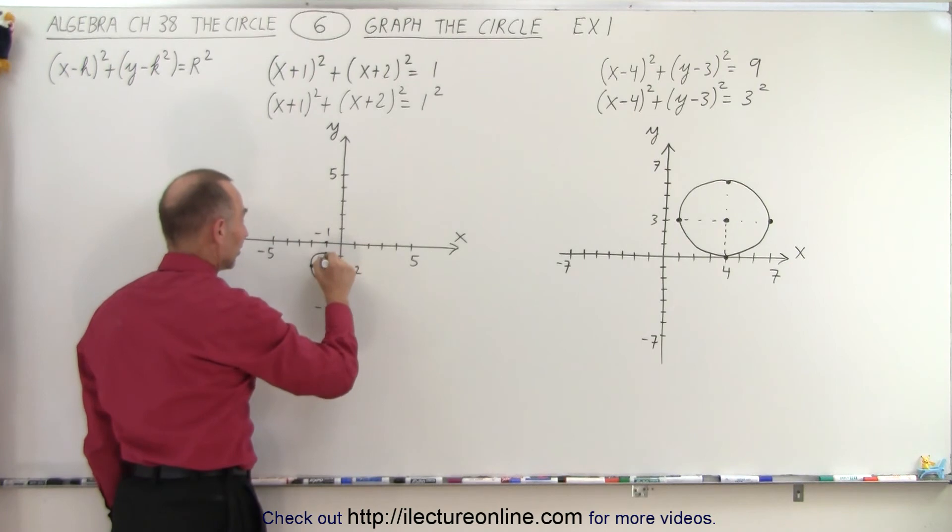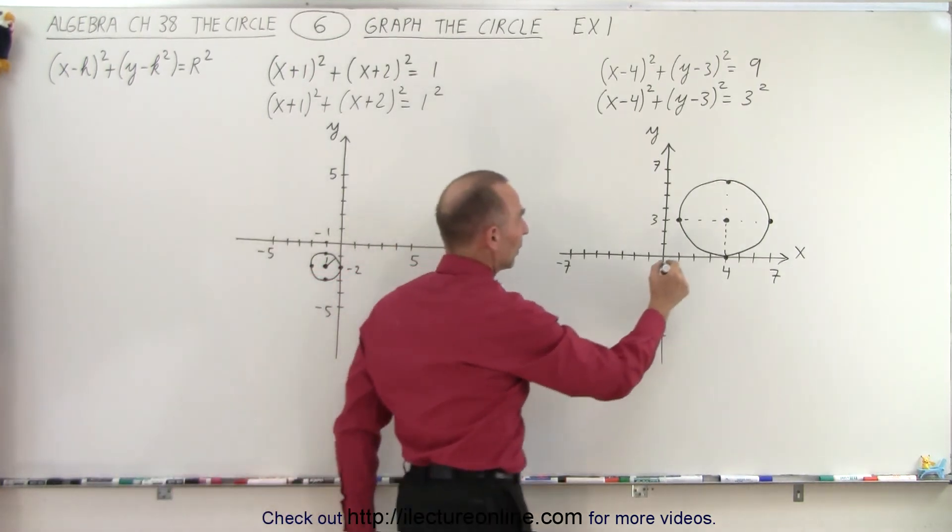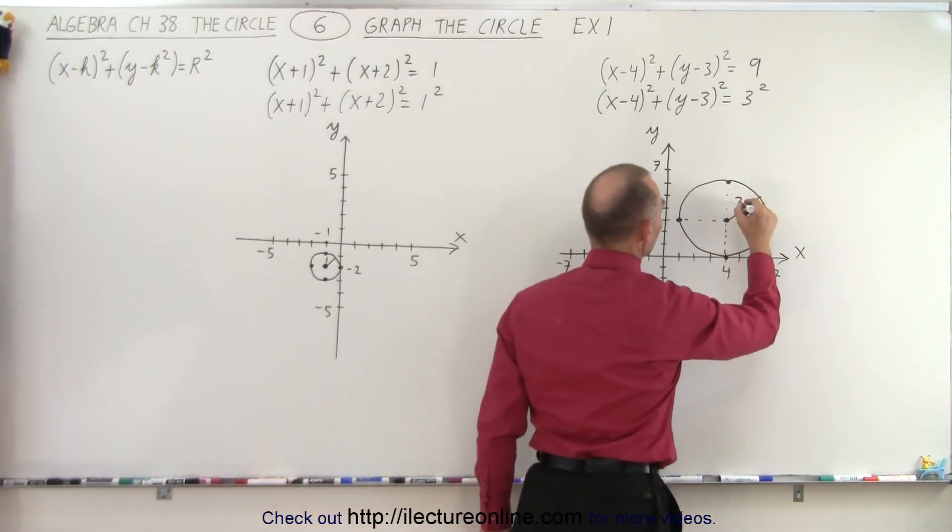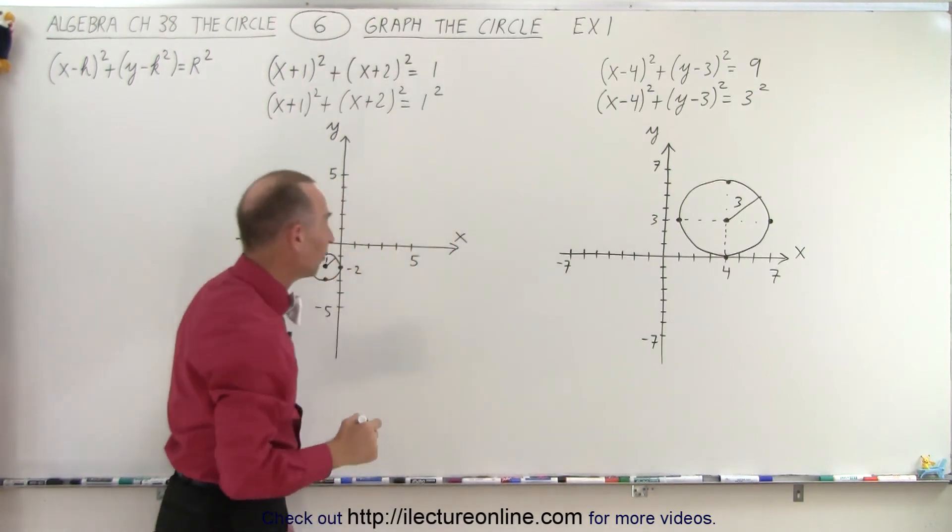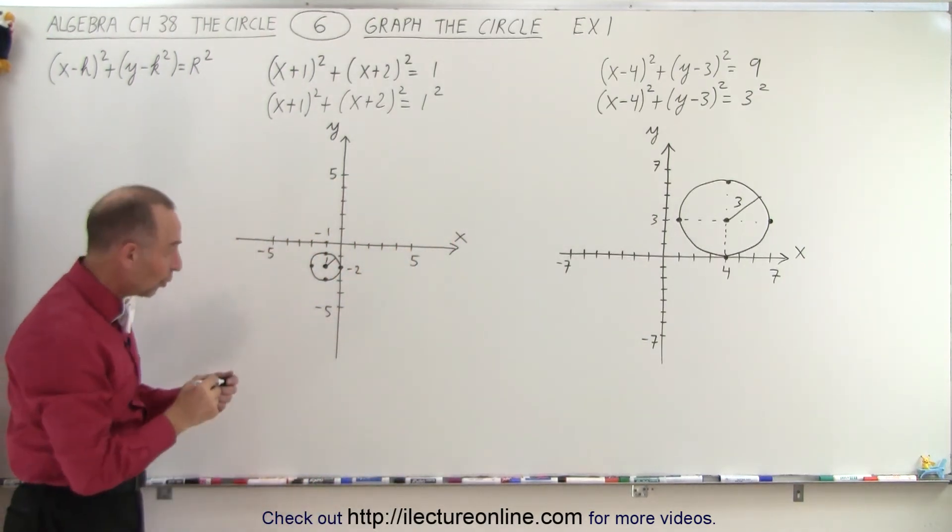So you can see that the radius here is equal to 1 and the radius here is equal to 3. And so that's how we graph those two equations.